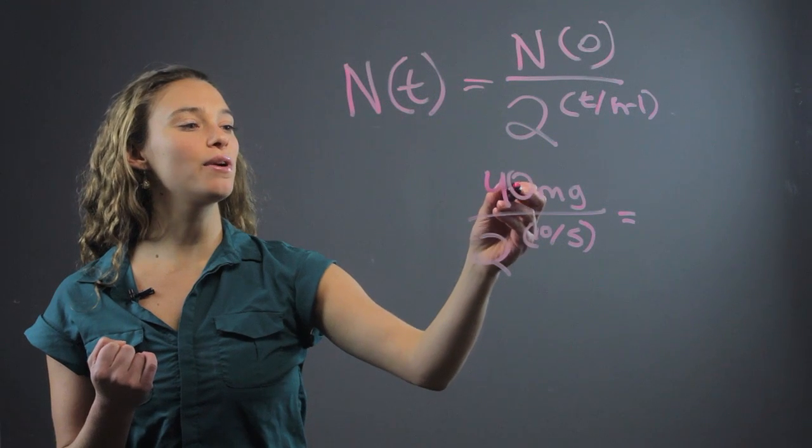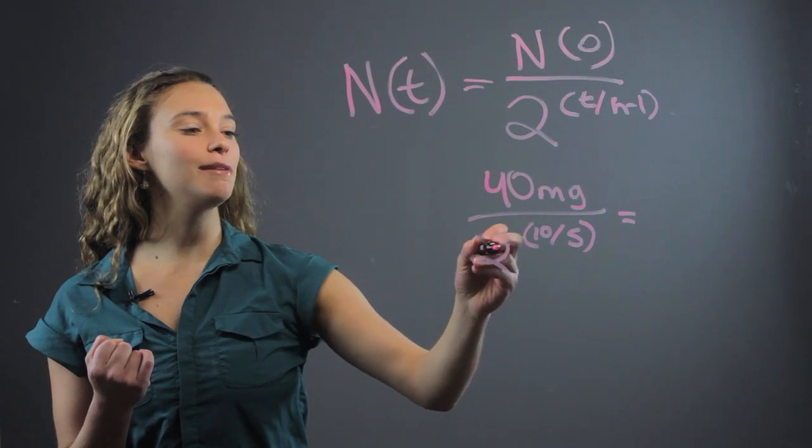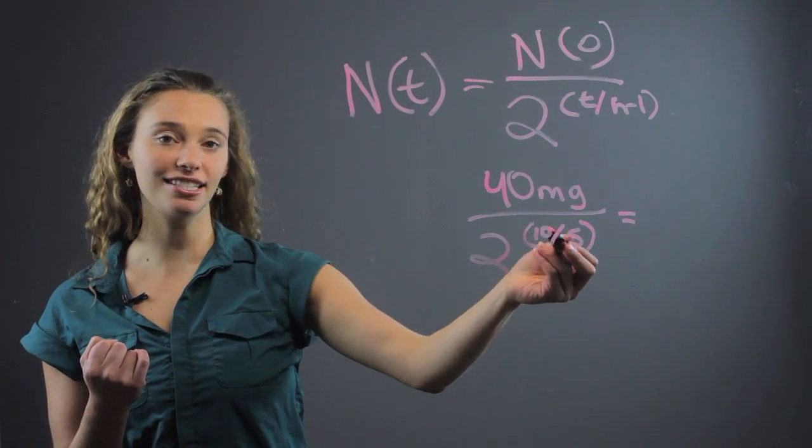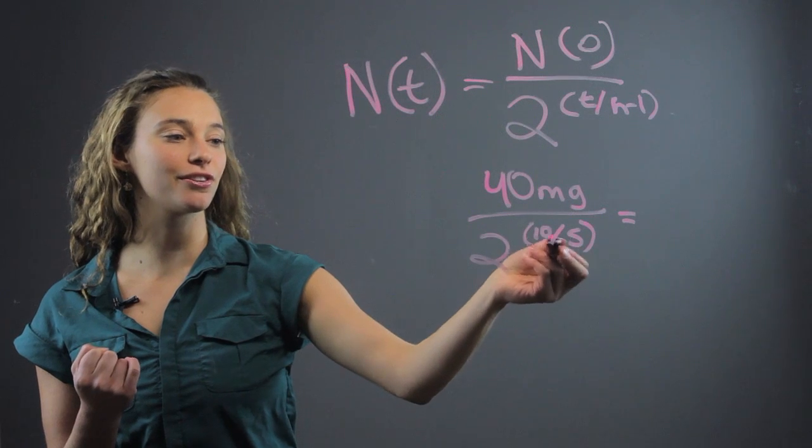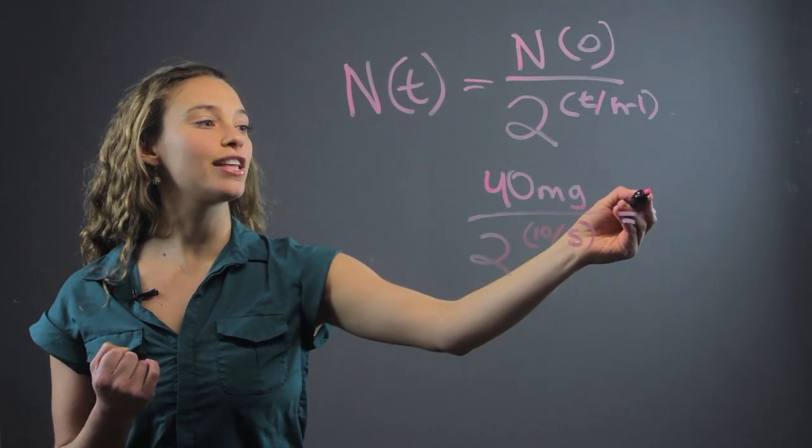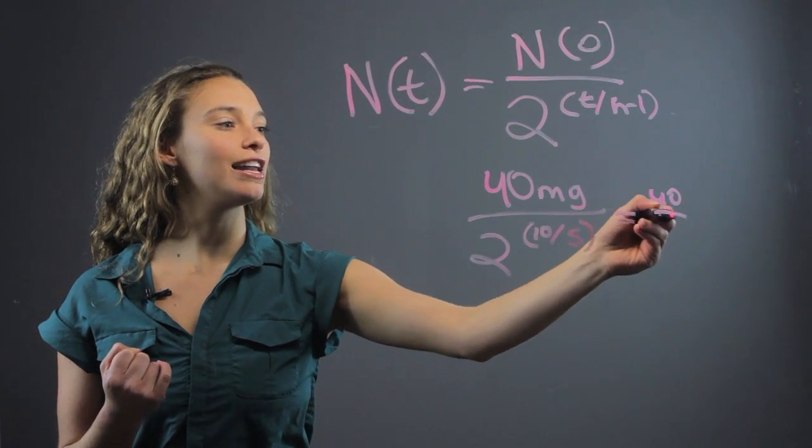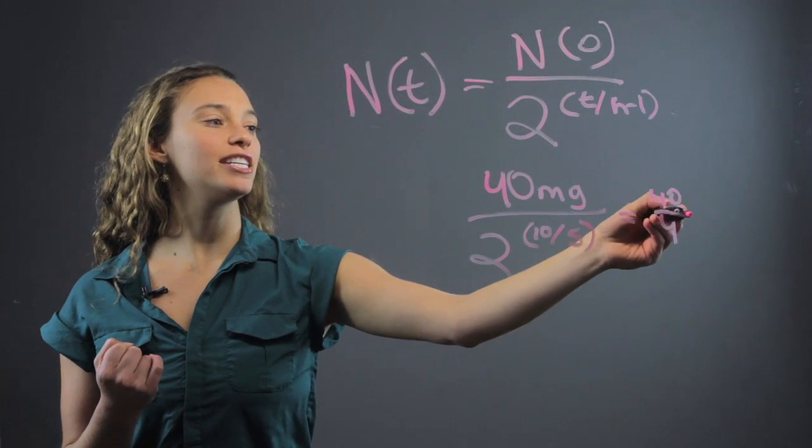Then we know that 40 divided by, well this is 2 to the second, right? 10 divided by 5 is 2. 2 to the second is 4. So that's going to be 40 divided by 4, which is 10.